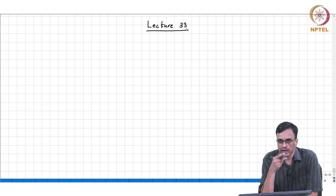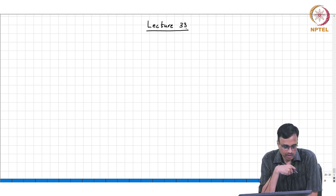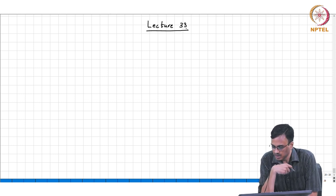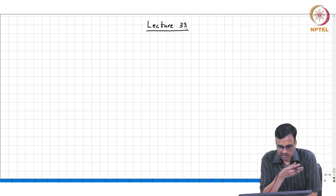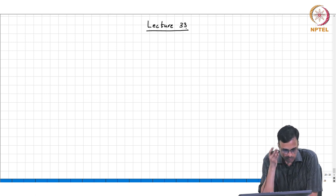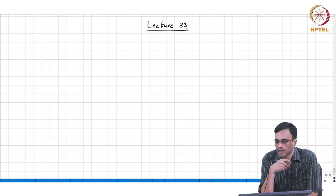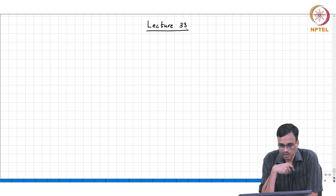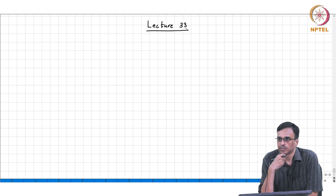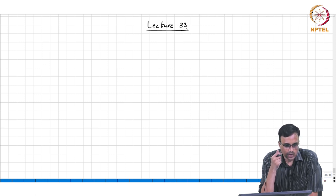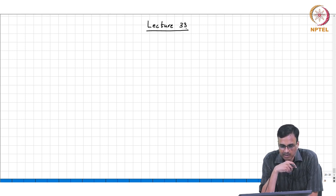In the last class we were looking at the stability of negative feedback systems. We started off with a first order forward amplifier and found that it is unconditionally stable. Unfortunately, the practical reality is that the DC gain you can get is very modest, and consequently it is not realizable in practice.